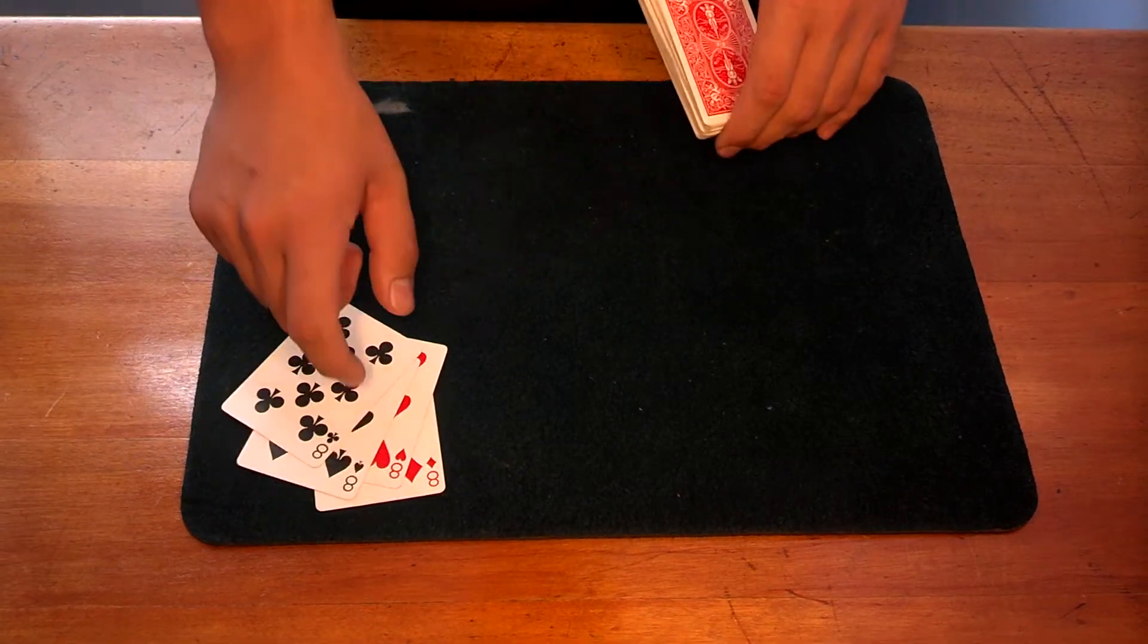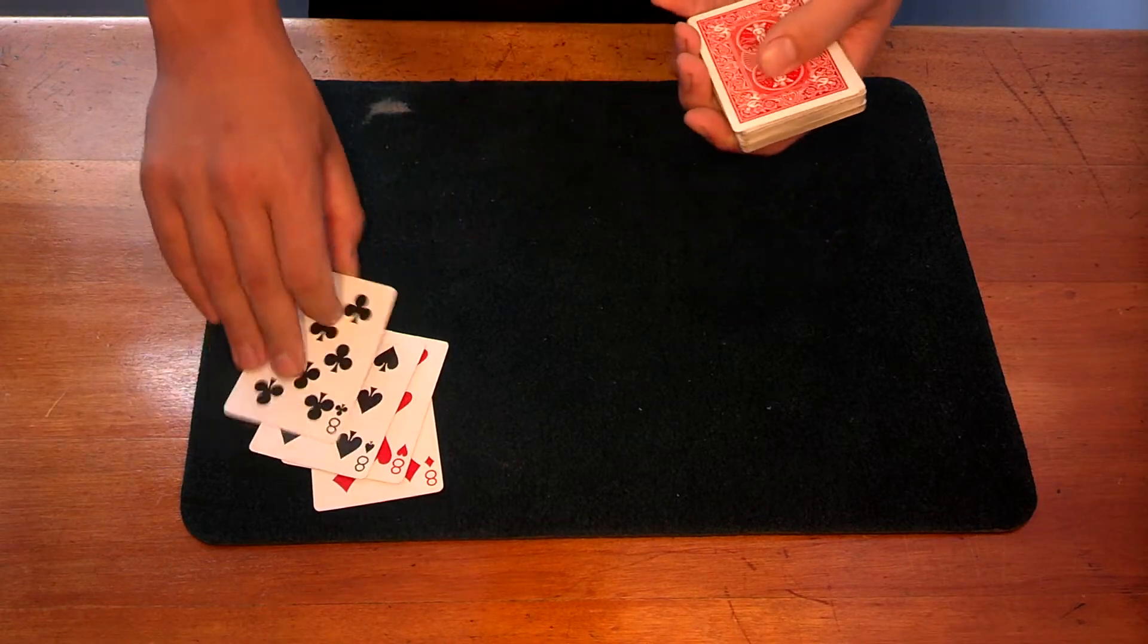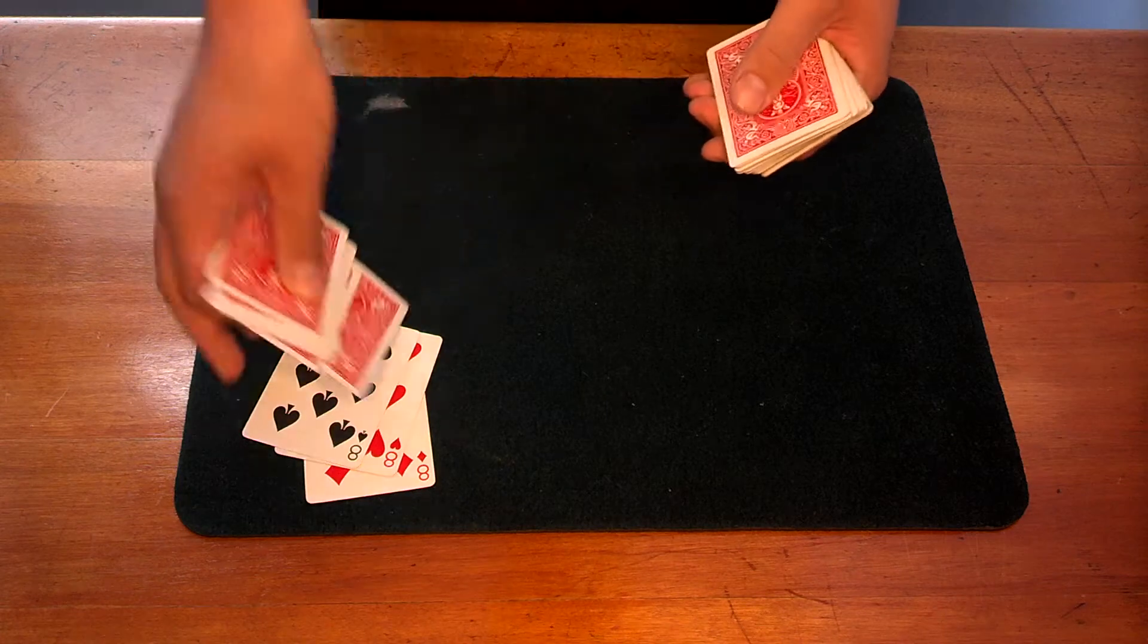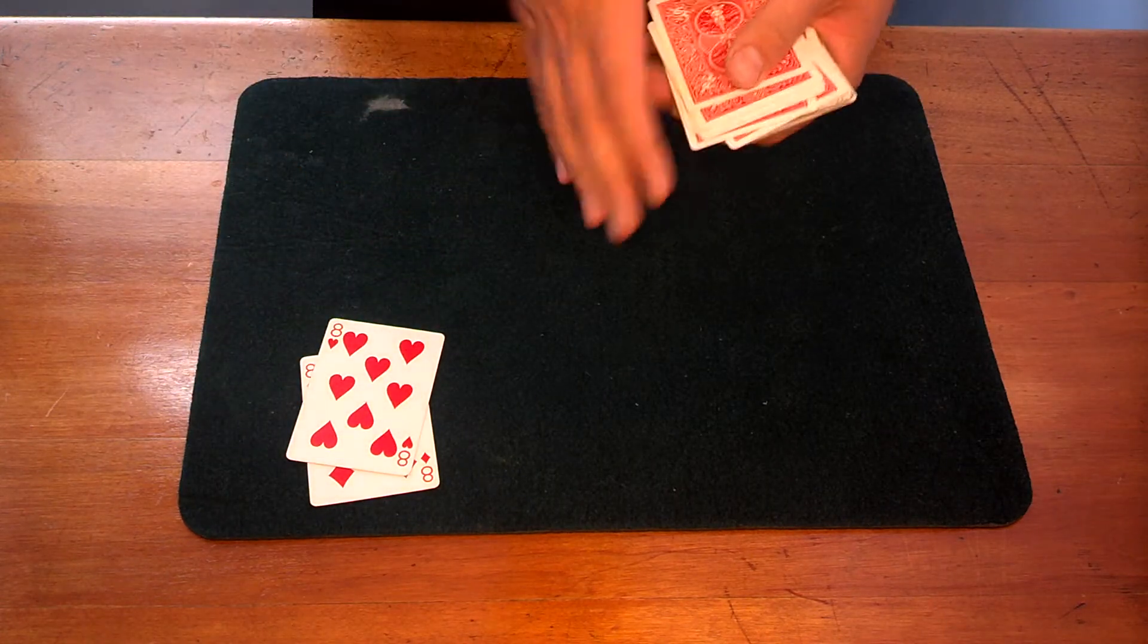Alright, so we're going to strategically place these eights into the deck. The first one goes on top. Six, seven, eight, nine. The second one goes at the tenth position.